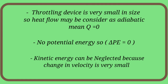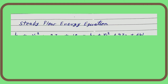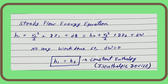Now, why do we need a relation? With the help of the Steady Flow Energy Equation (SFEE), which we learn about in thermodynamics, when we apply it and keep all these values — heat transfer zero, no potential or kinetic energy change — we find that enthalpy is going to be constant in the throttling process. Therefore, the throttling process is an isenthalpic process, and throttling devices are called isenthalpic devices.